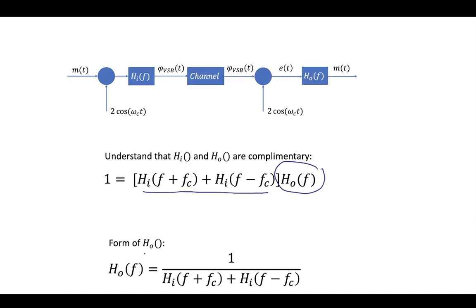And so the form of H out should be this, 1 over the sum of H in shifted to plus FC and H in shifted to minus FC should give us this output filter. And this is going to be a low-pass filter. And these are going to include low-pass components.